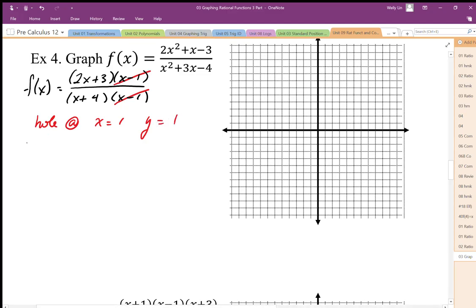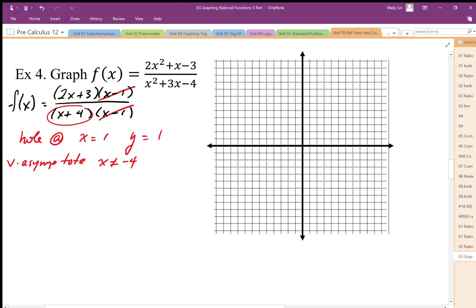My whole vertical asymptote comes from the x equals negative 4 restriction. So I'm going to put that in there. So my vertical asymptote at x equals negative 4.